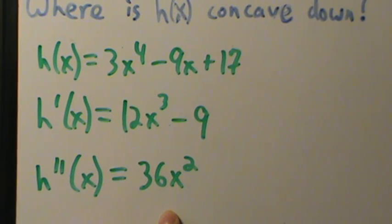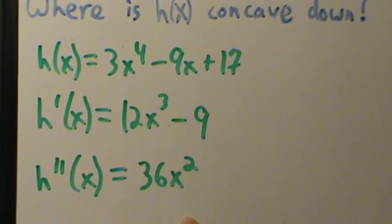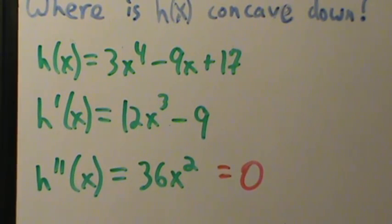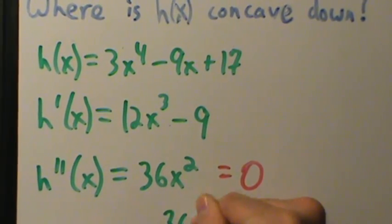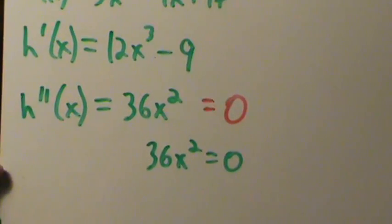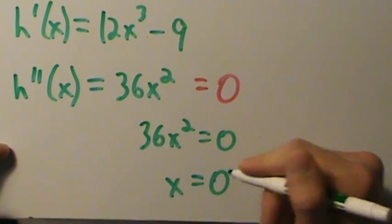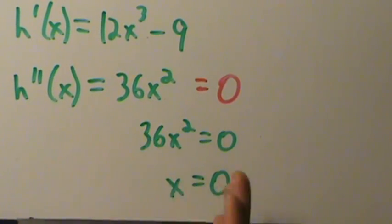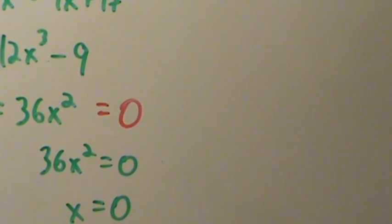Now that's our second derivative. We want to know where it's zero and where it's undefined. It's undefined nowhere — it's just 36x squared, so it's defined everywhere. We only need to know where it equals zero. Setting 36x squared equal to zero, the only value that works is x equals 0. But that's not a point of inflection yet — it's a possible point of inflection. So we have to do our sign chart, like in the last couple of videos.